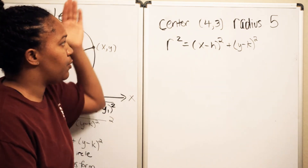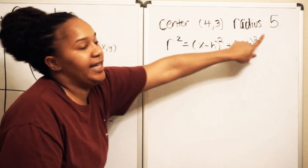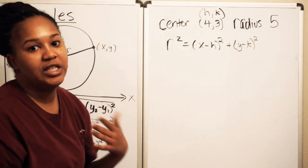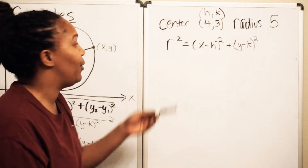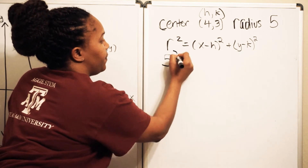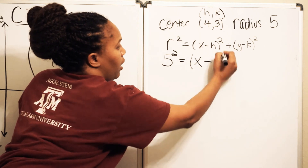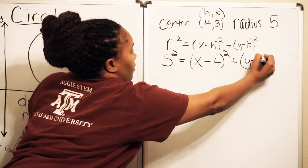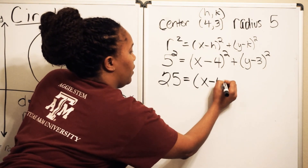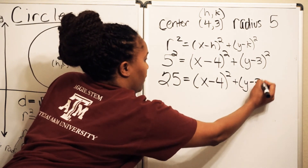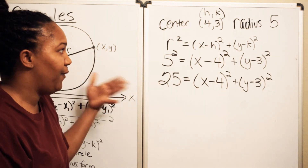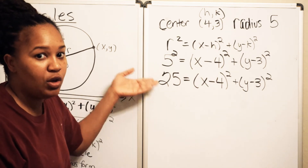Recall that the center-radius form is r squared equals (x minus h) squared plus (y minus k) squared, where r is the radius and (h, k) is the center. For this example, we want to find an equation with center (4, 3) and radius 5. So h equals 4, k equals 3, and r equals 5. We plug those values in: (x minus 4) squared plus (y minus 3) squared equals 25, since 5 squared is 25. This is the equation of the circle in center-radius form.